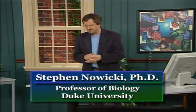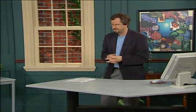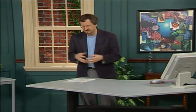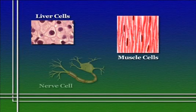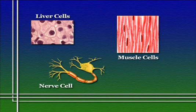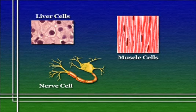We know that all organisms are made of cells, and we know that complex multicellular organisms such as ourselves are made of many different kinds of cells. But what do I really mean when I say different kinds of cells? What makes cells different? If you look at different types of cells under a microscope — say you take cells from your liver, cells from a muscle, cells from your brain — they all look different.